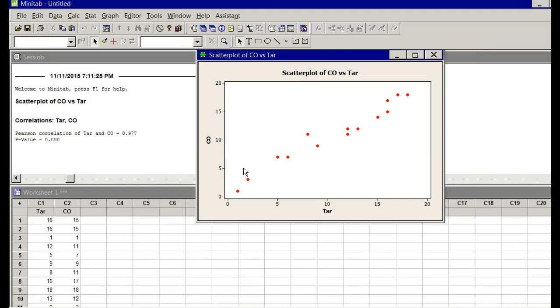0.5 to 0.75 is moderate positive, negative 0.5 to negative 0.75 is moderate negative. 0.25 to 0.5 is weak positive, negative 0.25 to negative 0.5 is weak negative.